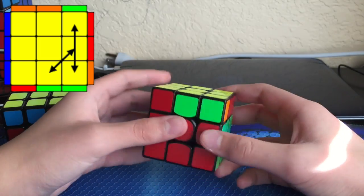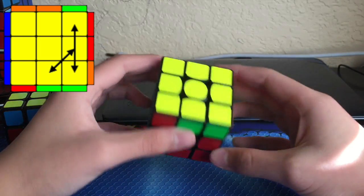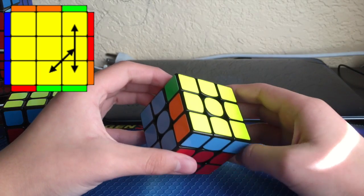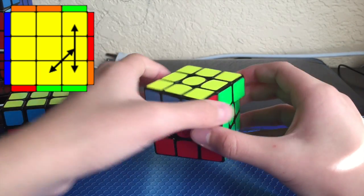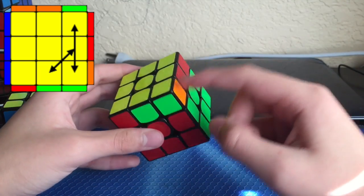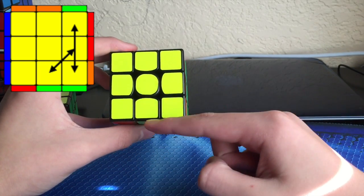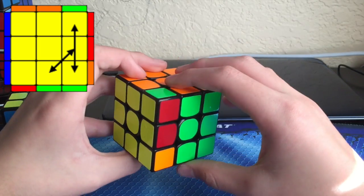To recognize this case, look for your solved bar and this 1x2 slot next to each other. Those are solved, and then you've got these two edges you need to switch and these two corners you need to switch.